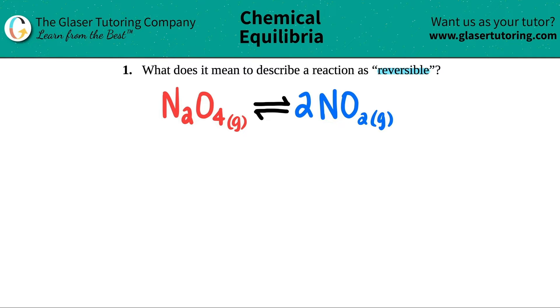We need to define what it actually means to describe a reaction as reversible. There are two different types of reactions in chemistry: reversible reactions and irreversible reactions. The one that I drew here is a reversible reaction because I see that I have this double arrow here.